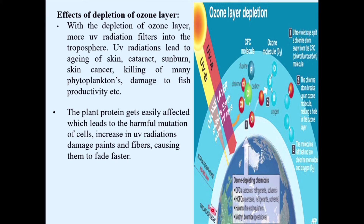Between the troposphere and the stratosphere there is a thick ozone blanket protecting us. The ozone layer extends from about 10 to 50 kilometers in thickness. The biota of the Earth's surface is protected from dangerous UVA and UVB radiations by this ozone layer. It acts as a shield for all dangerous radiations, keeping life on Earth's surface safe.